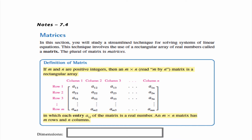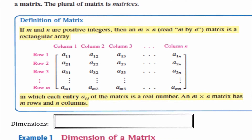Most of you haven't really dealt with a matrix before, but matrices is the plural of a matrix. So let's look at the definition: if M and N are positive integers, then an M by N matrix is a rectangular array. M represents the number of rows and N represents the number of columns. If you get rows and columns confused, think of Greek architecture — a column goes straight up and down, and a column here also goes straight up and down.